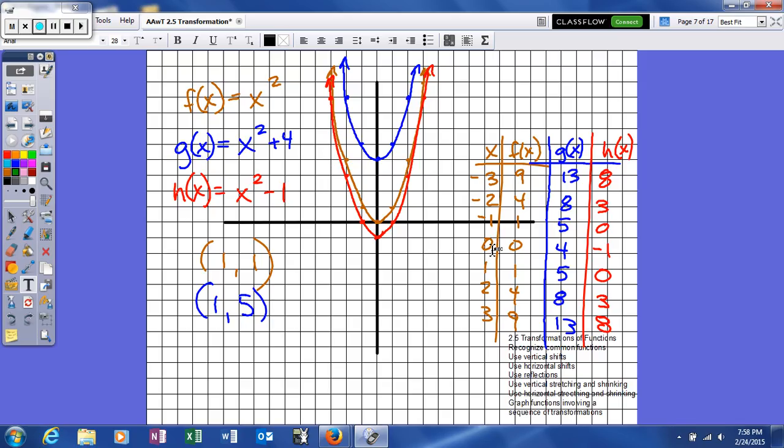and you can see if we plug in some values, you plug in 0, you get 0, 1, you get 1, 2, you get 4, 3, you get 9. And we're just basically squaring those, because that's what f of x is telling us to do.